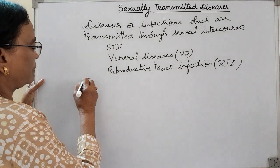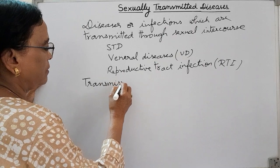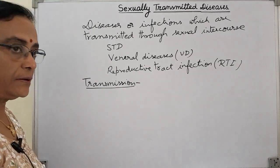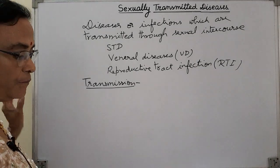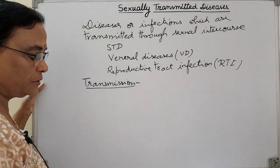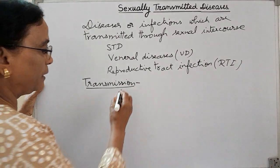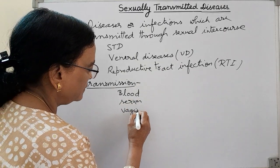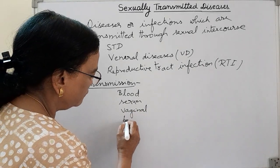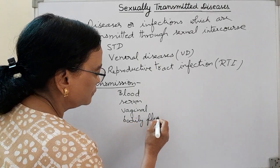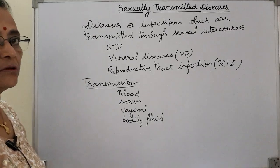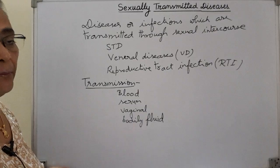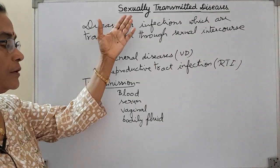How are these infections transmitted through sexual intercourse? Infections are transmitted from a diseased person to a healthy person through blood, serum, vaginal fluid, or other body fluids — when skin is in contact with skin, or when contact occurs with blood, serum, vaginal fluid, or body fluid. Bacteria, viruses, and protozoans are transmitted this way and cause disease.